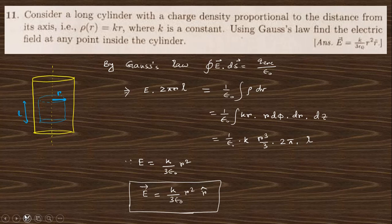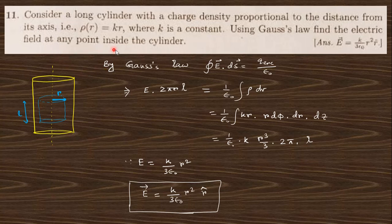Let us start with question 11. It says: consider a long cylinder with a charge density proportional to the distance from the axis — that is, if this is a cylinder, its charge density varies with distance from the axis. Using Gauss's law, find the electric field at any point inside the cylinder.